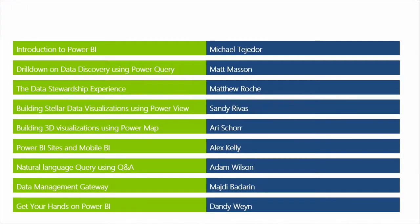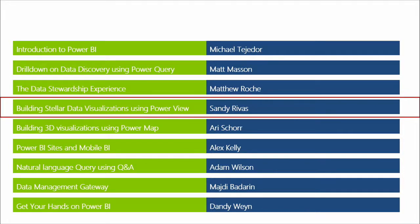We've had a busy agenda so far. We talked about the Power BI capabilities. Matt Mason showed us the great capabilities with Power BI, followed by Matthew Roach looking into the details. Right now, Sandy is going to drill down into data visualizations within PowerView, which is available through Excel. After Sandy, Ari is coming in to look at visualizations using PowerMap, then we'll cover sharing and collaboration, putting that onto a Power BI site, mobile BI, Q&A, and the data management gateway before we wrap up.